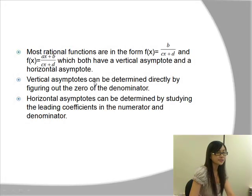Most rational functions are in the form f of x equals b over cx plus d, and f of x equals ax plus b divided by cx plus d, where a, b, c, d are real numbers. Both of them have a vertical asymptote and a horizontal asymptote.